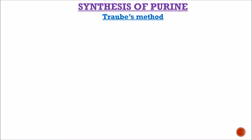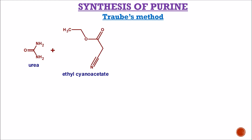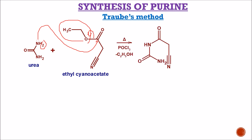Now we will study the synthesis of purine by Traube's method. Traube is the scientist who invented the synthesis of purine. He started with urea and ethyl cyanoacetate. Urea has two NH2 groups. One of the NH2 groups, having a lone pair of electrons, attacks the carbonyl group of ethyl cyanoacetate. The OC2H5 group takes up one hydrogen from urea and is liberated as ethanol (C2H5OH). One mole of ethanol is liberated, and the nitrogen of urea attaches to the carbonyl group of ethyl cyanoacetate, forming an open-chain structure.